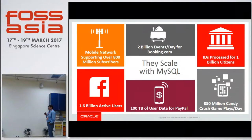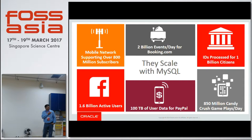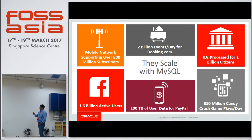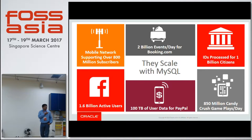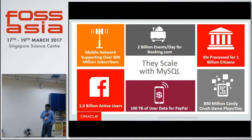2 billion events per day for Booking.com — they are an active collaboration partner for us. They work with us and whenever we make something new, we give it to Booking.com, they try it out, and we move forward together. Same for Facebook — 1.6 billion active users. It's not the only database they use, but it is one of the core databases they rely on.